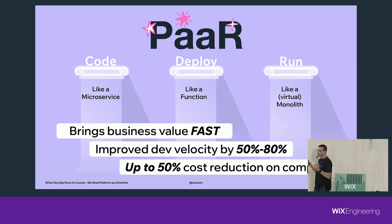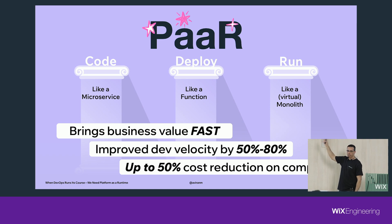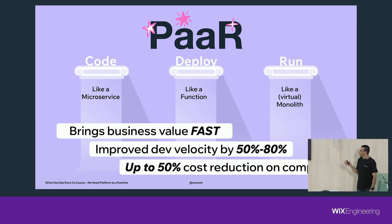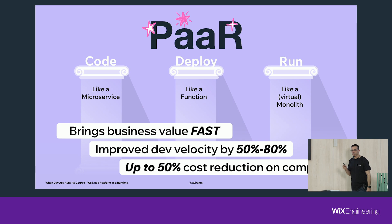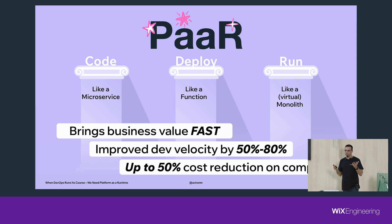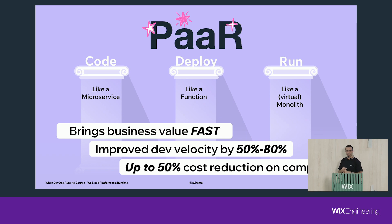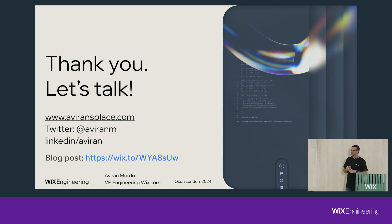Building on top of this technology, we were able to bring business value very, very fast. We reduced development time from three weeks to three hours, improved velocity by 50 to 80%, and we think we can save about 50% of our AWS compute cost, because with smaller services we can fit a lot more of them per machine. Thank you very much.